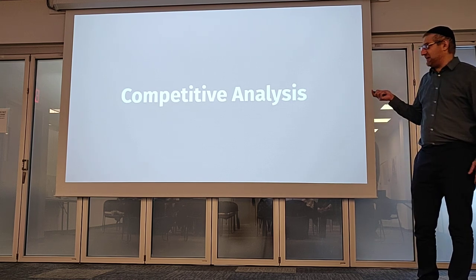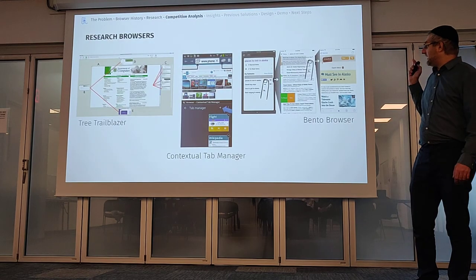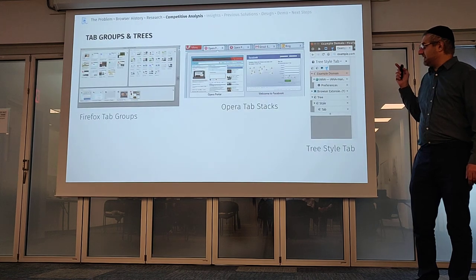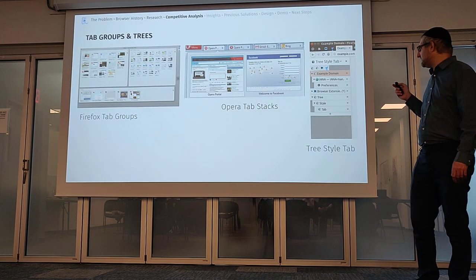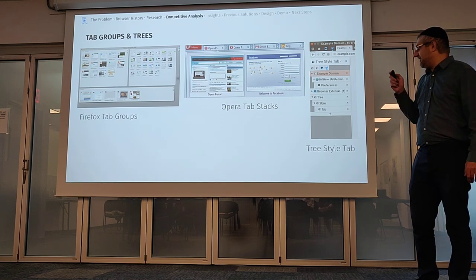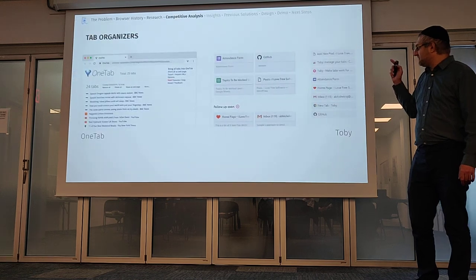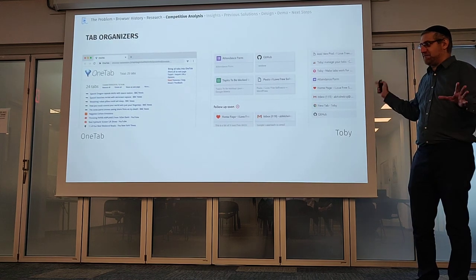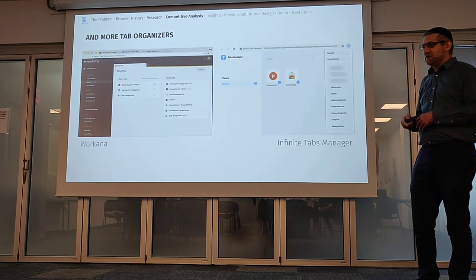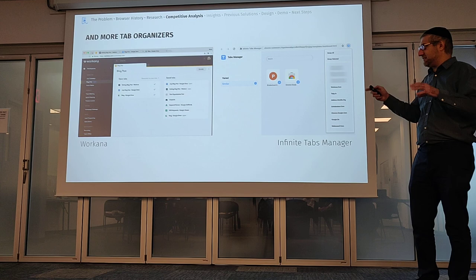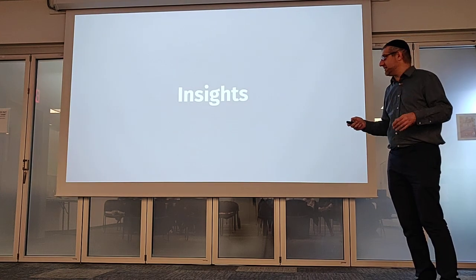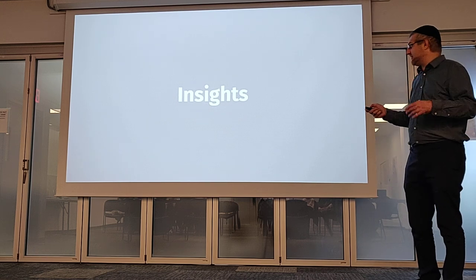I did a competitive analysis to see how other people solved this problem. There are research browsers, which are interesting, and a bunch of browser features and add-ons. Tree Style Tab is especially interesting if you want to look into it. There are all these other tab organizers, but they require a lot of manual organization — basically a lot of manual work, except for a few of them. So I'd like to try and solve that a little better.